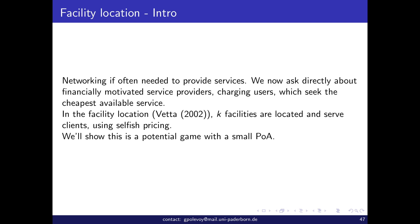We have K facilities, which are basically chosen by K players. The players will locate those facilities and serve the clients. The pricing is selfish — each player is selfish. The players will locate the facilities, and the clients also rationally choose the cheapest option. We are going to ask about the equilibria and their efficiency. We will see that equilibria exist because it's a potential game, and it's a finite game because there is a finite number of locations for the facilities.